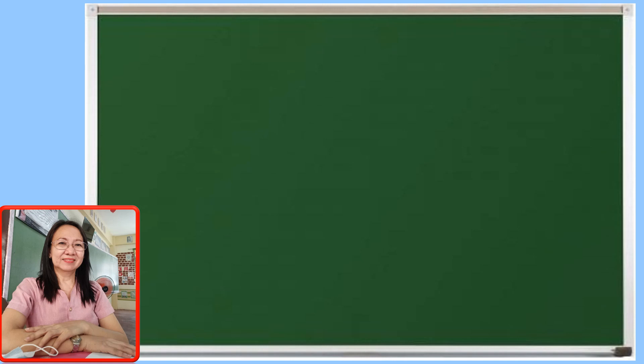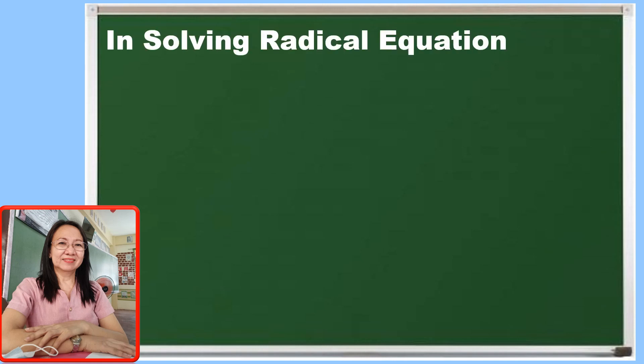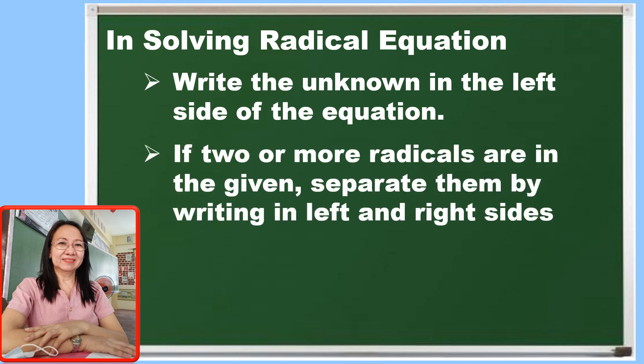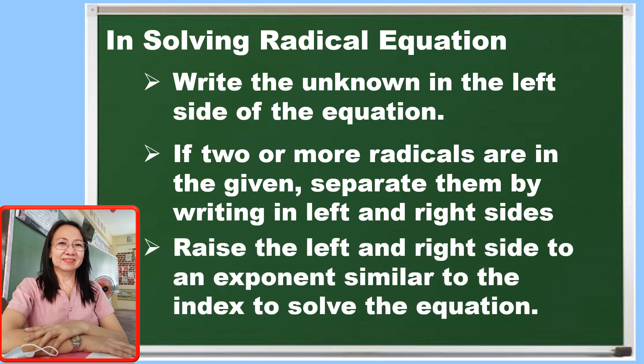Now remember the following in solving radical equation. Write the unknown on the left side of the equation. In the case where two or more radicals are observed in the given, separate them by writing one on the left side and the other on the right side. Then raise both sides of the equation to an exponent similar to the index to solve the equation.